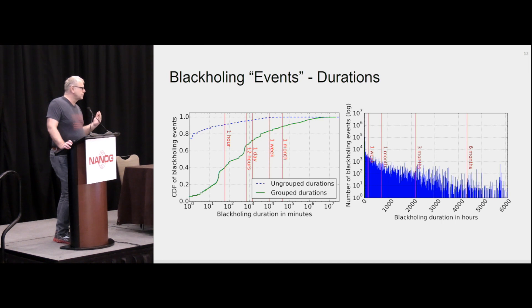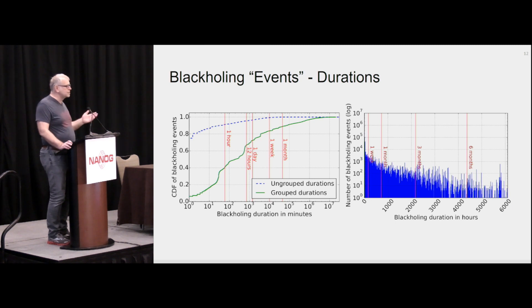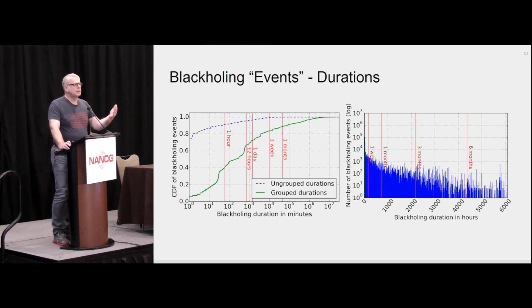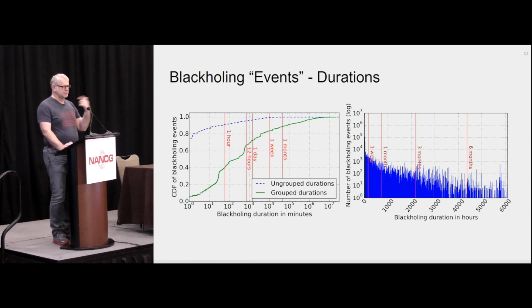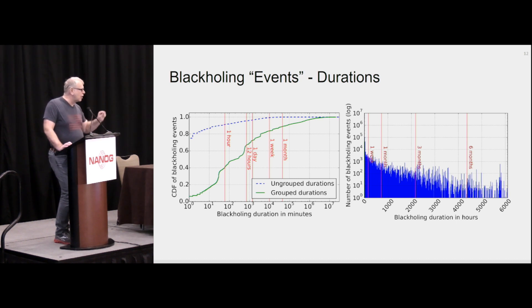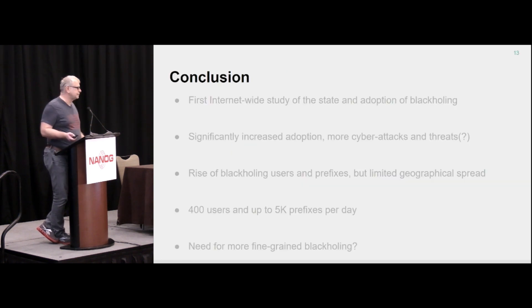The huge difference comes from the fact that when you get attacked, you do not know when it stops. Because there is a service behind it, you want to blackhole the prefix for as short a time as possible. So what you do is probe: you announce the blackholing, then withdraw, check if you are still attacked, and if so, re-announce — and so on. That is why ungrouped durations show a high number of short events, but when you start to group them, you see the actual duration is much longer.